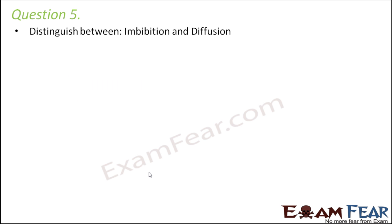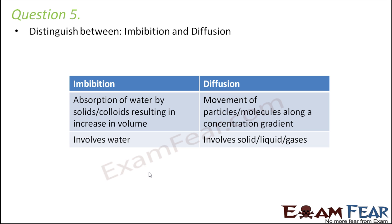Question: distinguish between imbibition and diffusion. Imbibition is a special form of diffusion involving the absorption of water by a porous solid, resulting in swelling or an increase in volume. For example, when you soak almonds in water overnight, they swell up because they absorb water through pores on their surface. Diffusion is the movement of particles — solid, liquid, or gas — across a concentration gradient.